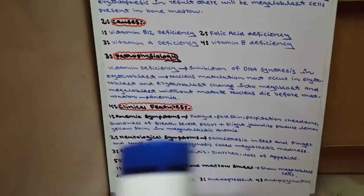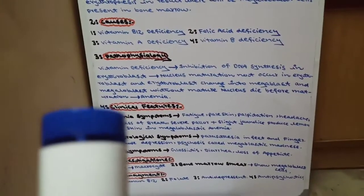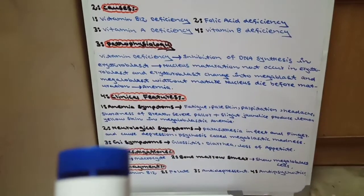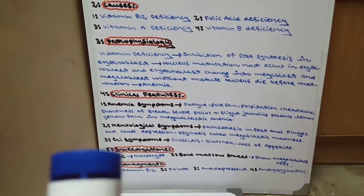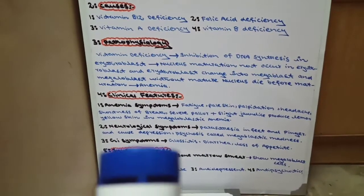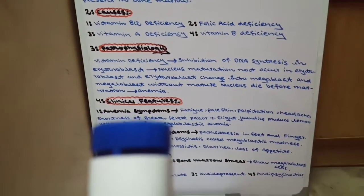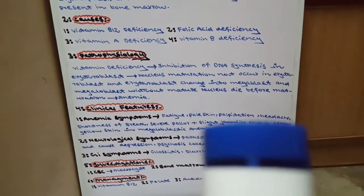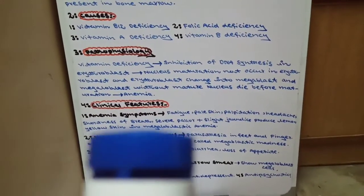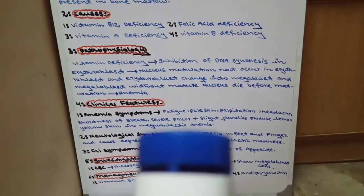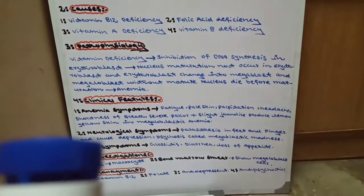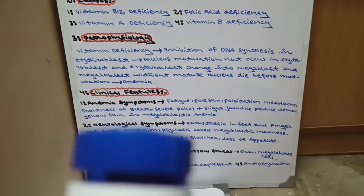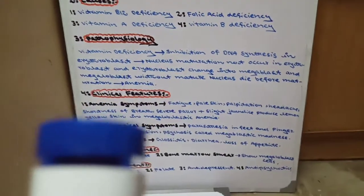Ab clinical features. Megaloblastic anemia ki teen bade clinical features hain. Sabse pehle hain anemia symptoms: fatigue, pale skin, palpitation, headache, shortness of breath. Us ke baad severe pallor plus large tongue mil jaye ga, toh yeh lemon yellow skin paida karega megaloblastic anemia mein — patient ki skin nimbu ki tarah lemon yellow hogi.